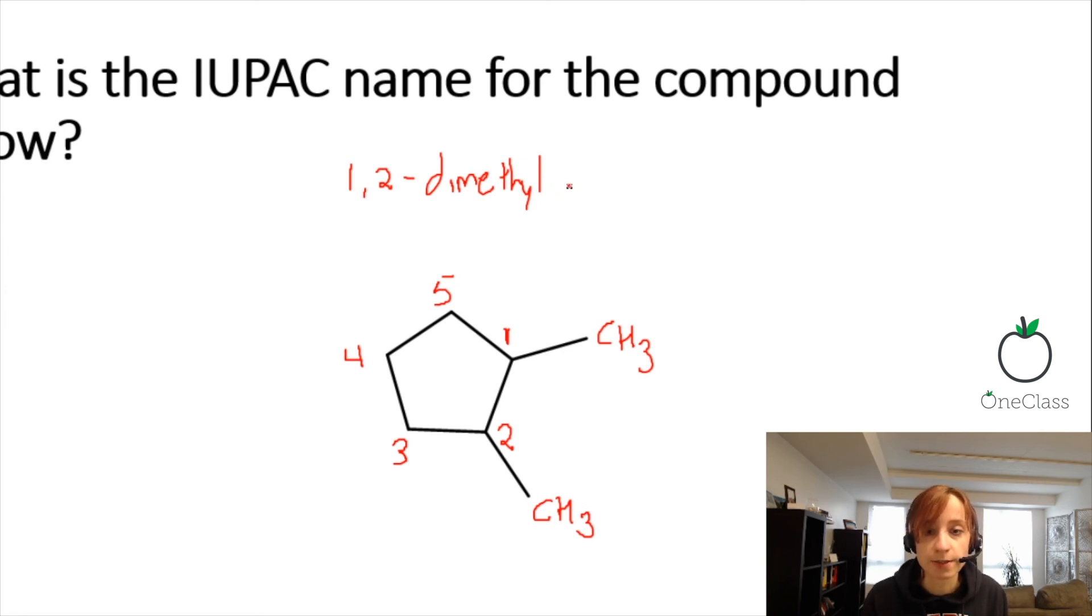So 1,2-dimethyl cyclopentane. Because it is an alkane, there are no double bonds and no triple bonds. So that's the -ane ending.